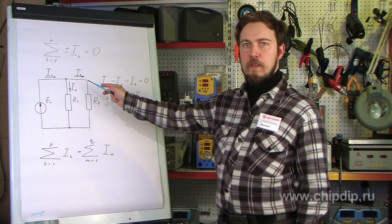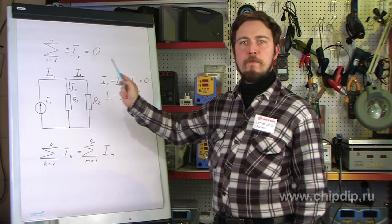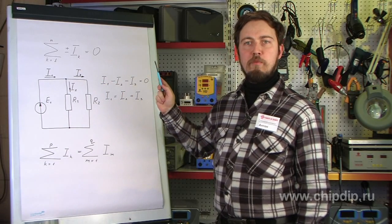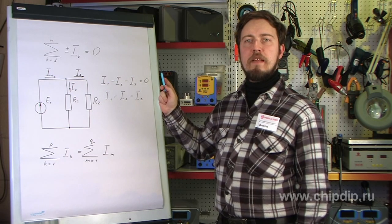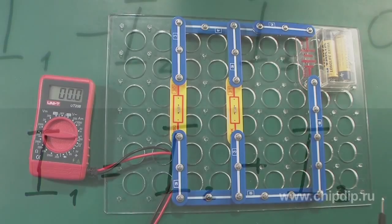For instance, if there is a T-shaped electrical circuit node where electric currents flow through two wires, current will flow from this node through the third wire and it will equal the product of two incoming currents.